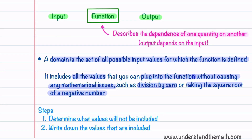There are two steps that you need to complete to find the domain of a function. The first one is the hardest one, and it's to determine what values will not be included in the domain. And then after those are determined, what you need to do next is just write down the values that are included.